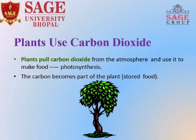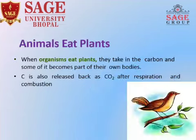Plants use Carbon Dioxide. Plants pull Carbon Dioxide from the atmosphere and use it for preparing food by the process of photosynthesis. Plants absorb much of the Carbon in their internal portions as food.